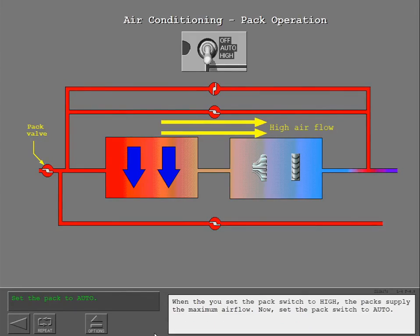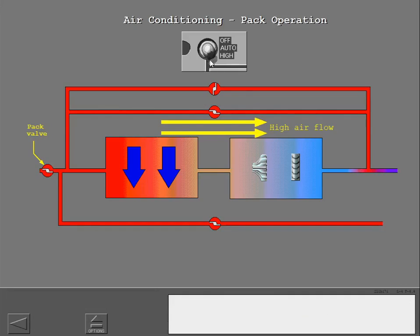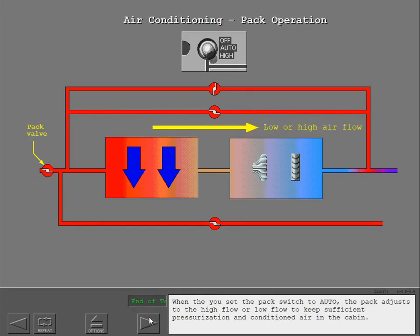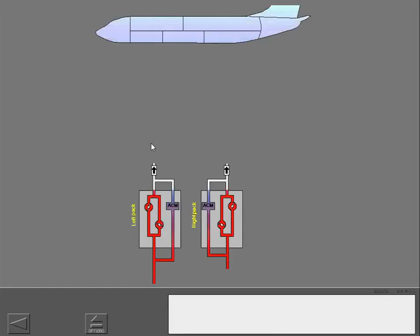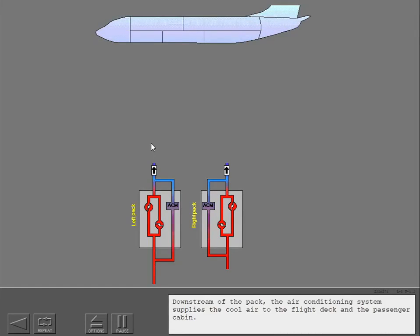Now set the pack switch to auto. When you set the pack switch to auto, the pack adjusts to the high flow or low flow to keep sufficient pressurization and conditioned air in the cabin. Downstream of the pack, the air conditioning system supplies the cool air to the flight deck and the passenger cabin.